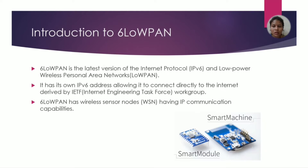6LoWPAN is the latest version of the internet protocol for low power wireless personal area networks. It has its own IPv6 address, allowing it to connect directly to the internet, derived by the IETF workgroup. 6LoWPAN operates as a wireless sensor mode having IP communication capabilities.